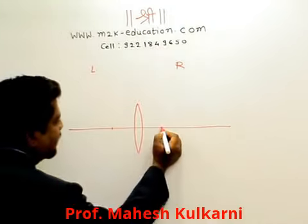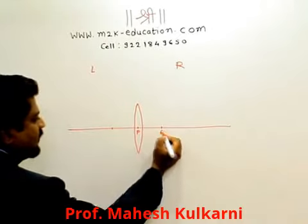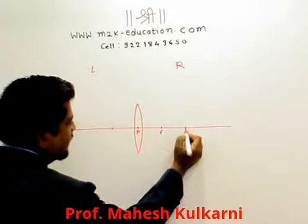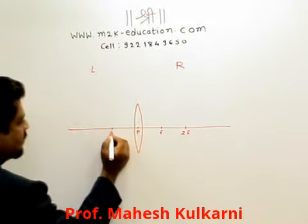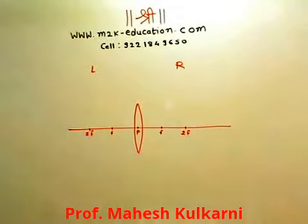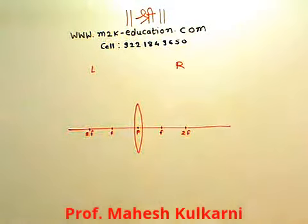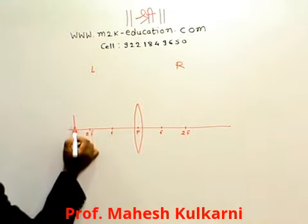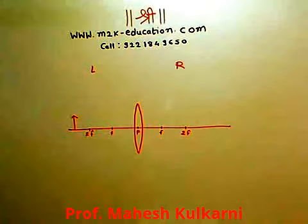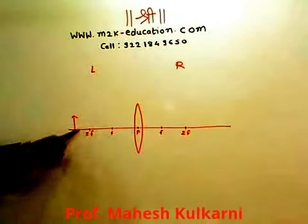I am making a diagram here. You are aware — this is the principal axis, this is the focal length, sorry, this is the focus. This same distance I am considering as F, and this is approximately 2F. Now I am considering the object is placed here — I am making an arrow to indicate the object is upright. It is beyond 2F.